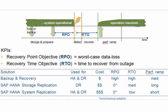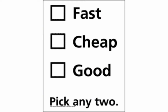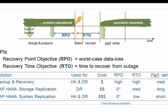Here we see a comparison on RPO, RTO, cost, and performance consequences — specifically the ramp-up time needed to get back in business. As always, you can get it fast, cheap, or good, and you pick any two. Backup gives disaster recovery at relatively low cost, but requires patience before we are back in business should something disastrous occur. The more often you backup, the more storage you need, hence the cost will go up, plus it will still be relatively slow.